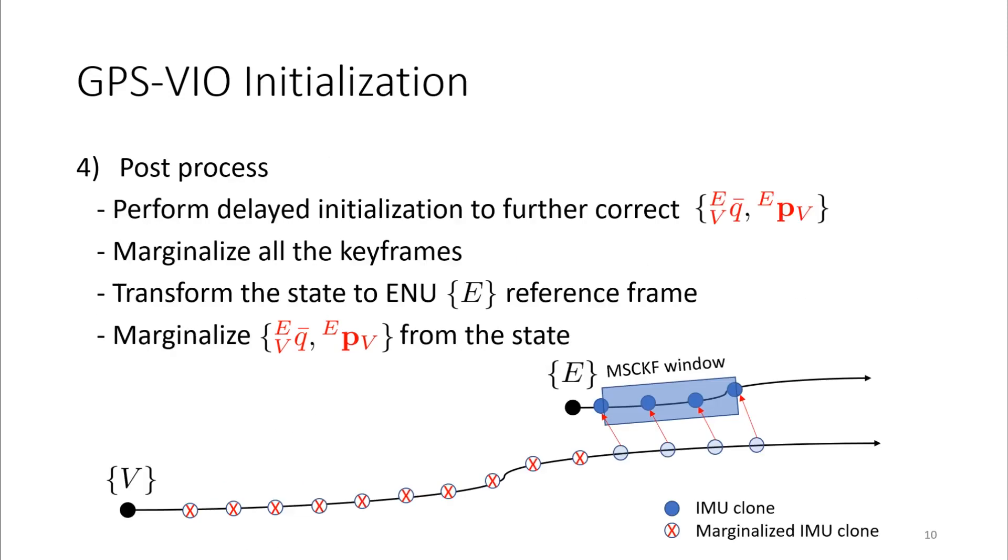Once we get the initial guess from the transform parameters, we further correct them by performing delayed initialization. Then we marginalize all the keyframes so that we only have clones in MSCKF window and perform state transformations so that the state is fully observable.